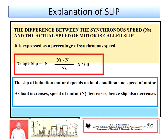Slip is defined as the difference between synchronous speed Ns and actual speed of the motor N. It is expressed as a percentage of synchronous speed: percentage slip s = (Ns − N) / Ns × 100, where N is the rotor speed or actual speed of the motor, and Ns is the synchronous speed, given by Ns = 120f / P, where f is the supply frequency and P is the number of poles. Slip is denoted by s.